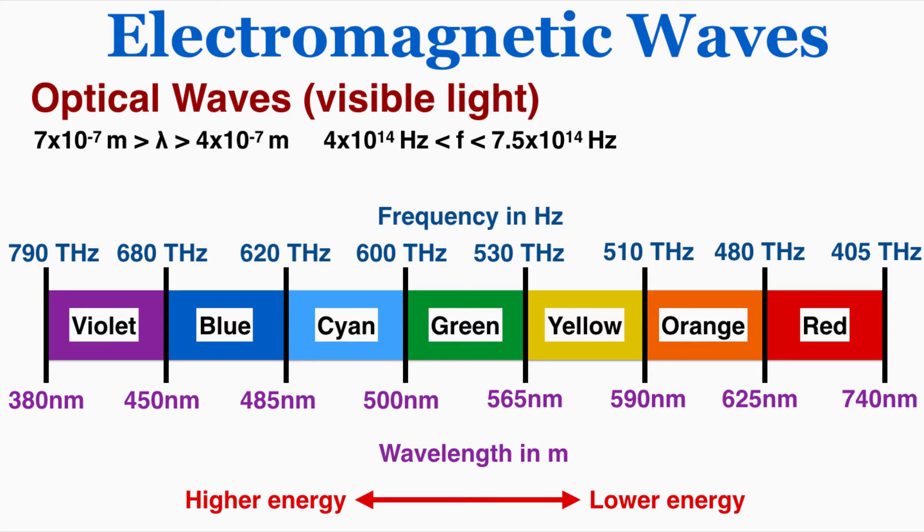Optical waves are what we can see with our eyes. It's visible light. You can see I've written the range of wavelength and frequencies, and you'll also notice that I've split up the specific colors by the wavelength and frequency. So different colors that we experience are associated with different wavelengths and different frequencies. The capital T in the frequency is short for terra, and the lowercase n in the wavelength is short for nano. So you can see that as you go from red to violet, the energy goes up, the frequency goes up, and the wavelength goes down.